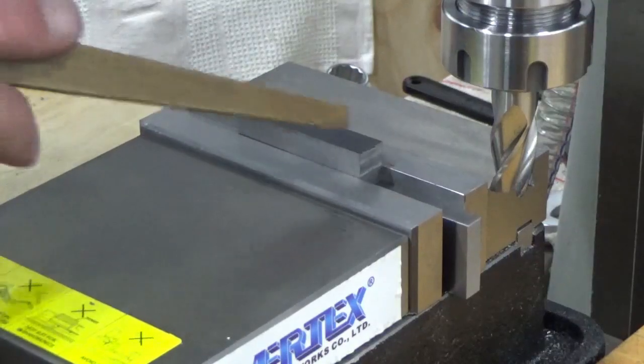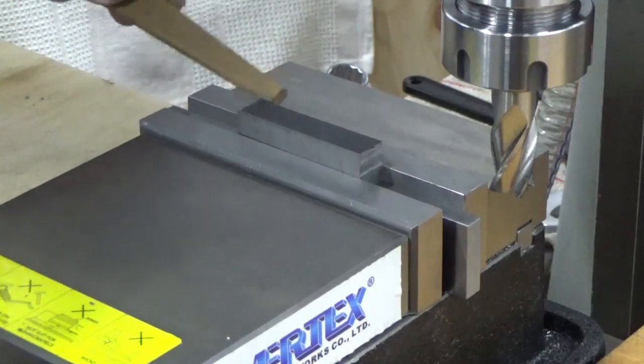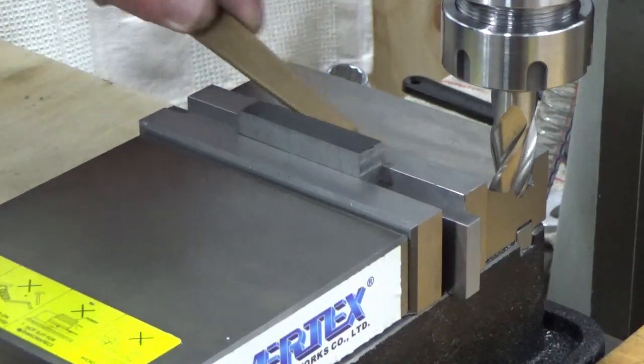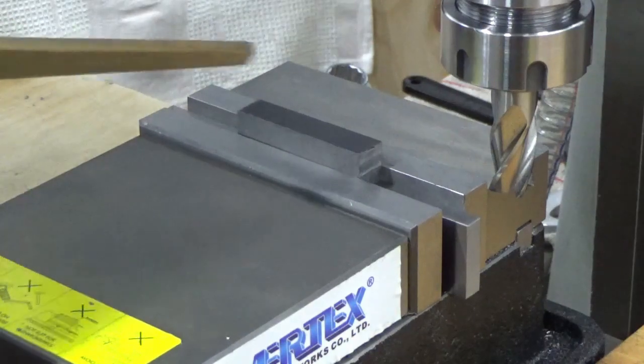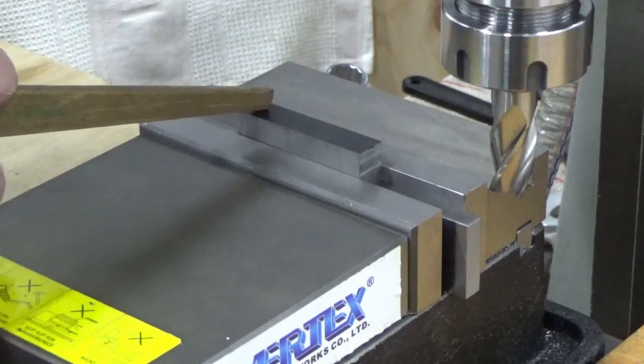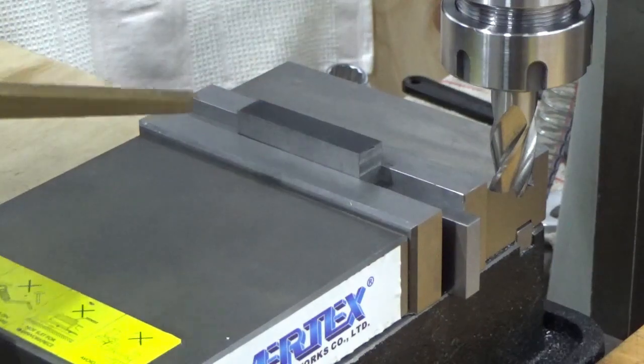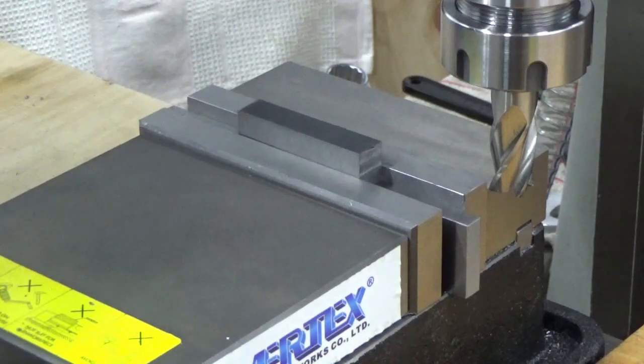We're now doing the next surface. Our reference edge that we cut before, we put into the back jaw where it should be. We'll actually just trim these down a bit to square them up, and then we'll move to the next side.